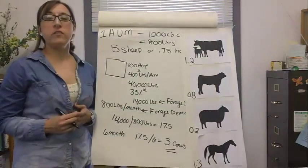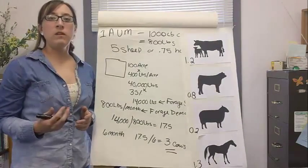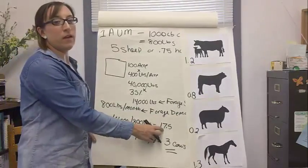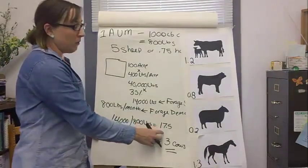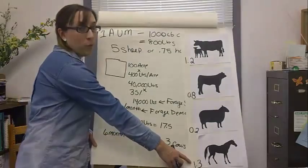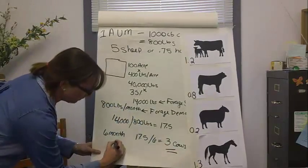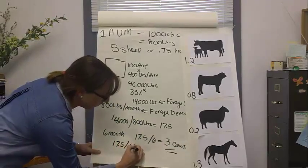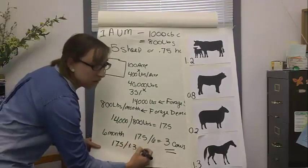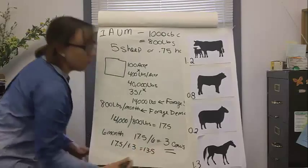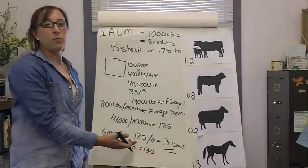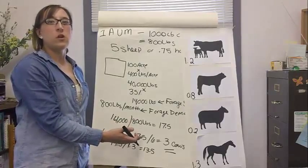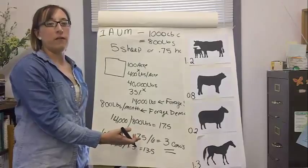Let's say we wanted to graze a different type of animal. We convert using our animal unit equivalents. If we have the 17.5 animal units per month and we want to graze horses, which is 1.3 animal unit equivalents, we take our 17.5 divided by 1.3, and we get 13.5. This means we can graze 13.5 horses for one month, or just one horse for a little over a year, or 13.5 months.